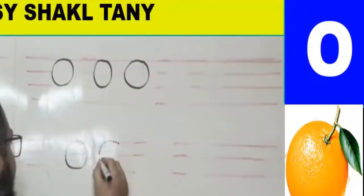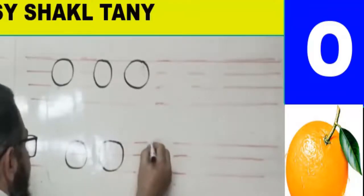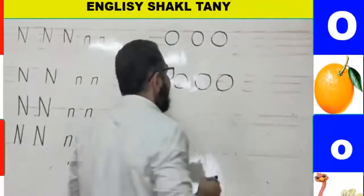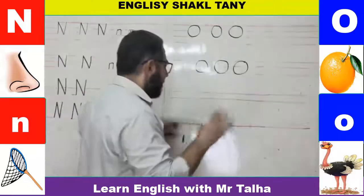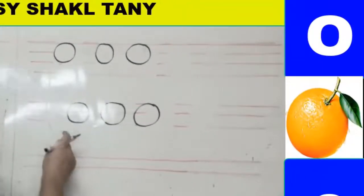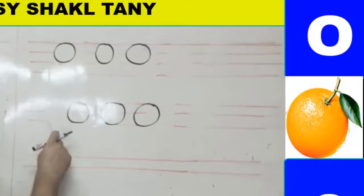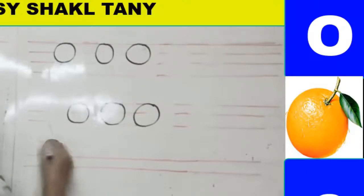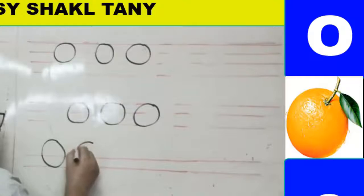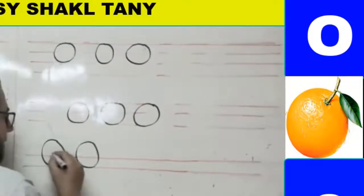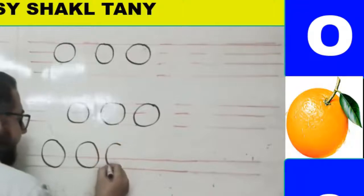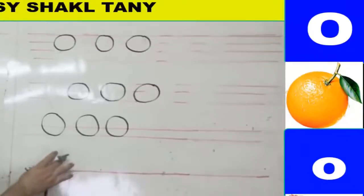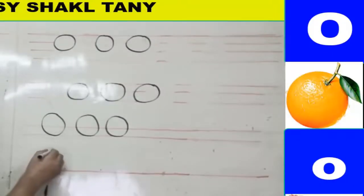On two lines, I start above the two lines, curve down to the second line, then go up again — that's capital O. On one line, the capital O sits on the line as a full circle shape.